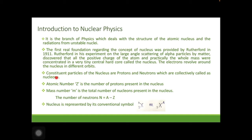Protons are positively charged particles and neutrons are neutral particles. The atomic number Z is the number of protons present in the nucleus. The same number of electrons are present in the atom, making the atom electrically neutral.